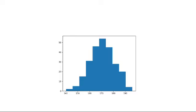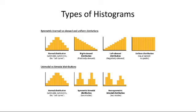Next we can see the types of histogram. These are some of the types of histogram: symmetric versus skewed and uniform distribution.